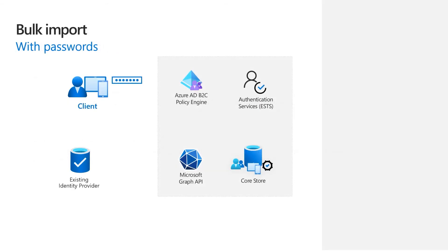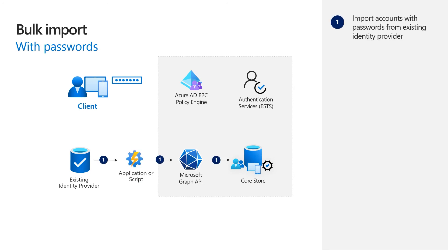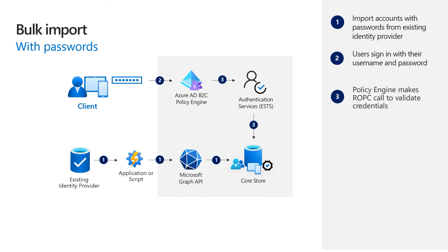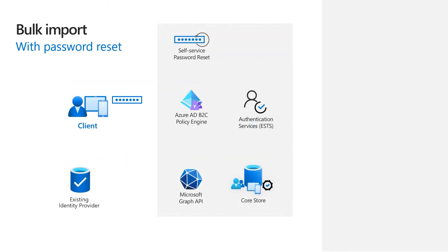With bulk import, you are required to write an application or script that uses the Microsoft Graph API to create user accounts in Azure AD B2C. Your migration application reads the user accounts from the existing identity provider — including their current credentials such as username and password — and creates corresponding accounts in the Azure AD B2C directory with the current credentials. Once accounts are created and provisioned in the core store, users can use their username and password to sign in. The Azure AD B2C policy engine validates them using ROPC-based authentication.